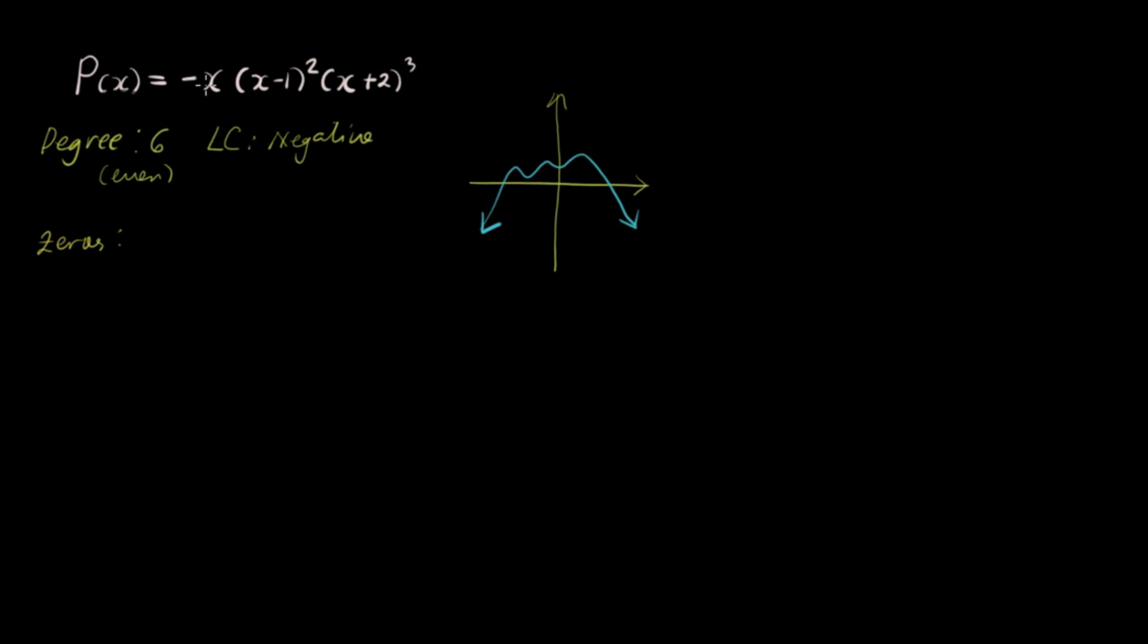When you substitute zero there, everything will be zero. So, zero is of multiplicity one. It's a zero of multiplicity one. And then, we have one as another zero of multiplicity two. And then, we have negative two. It's another of multiplicity three.